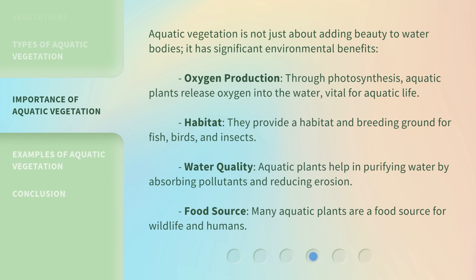Aquatic vegetation is not just about adding beauty to water bodies — it has significant environmental benefits. Oxygen production: through photosynthesis, aquatic plants release oxygen into the water, vital for aquatic life. Habitat: they provide a habitat and breeding ground for fish, birds, and insects. Water quality: aquatic plants help in purifying water by absorbing pollutants and reducing erosion. Food source: many aquatic plants are a food source for wildlife and humans.